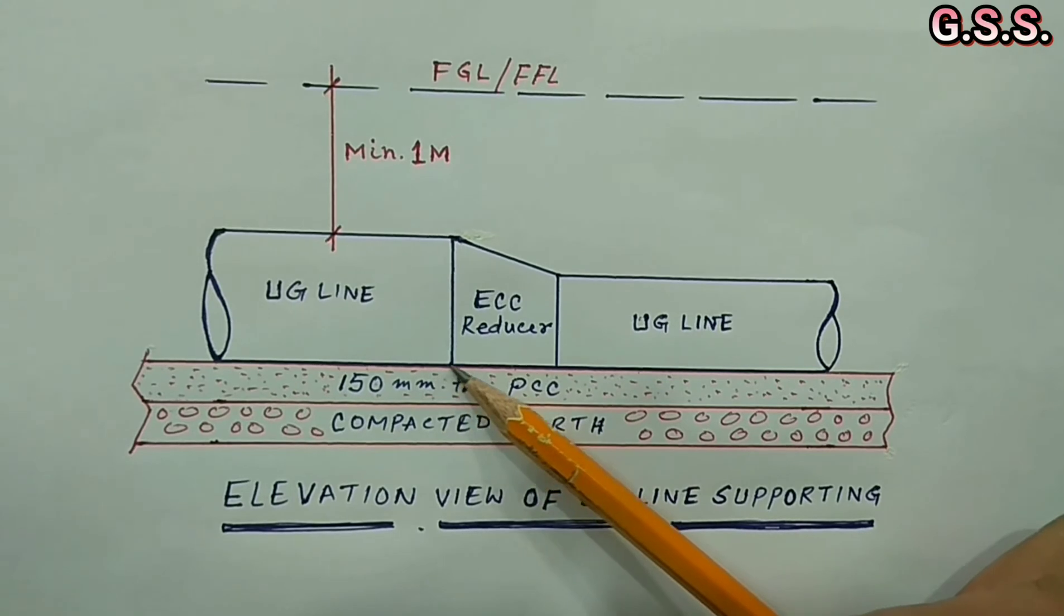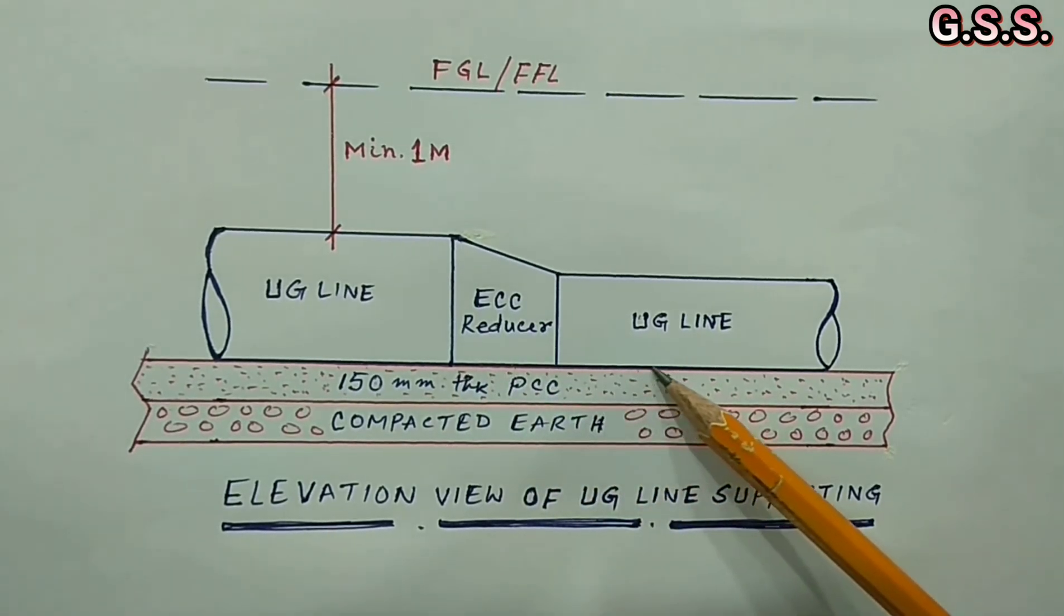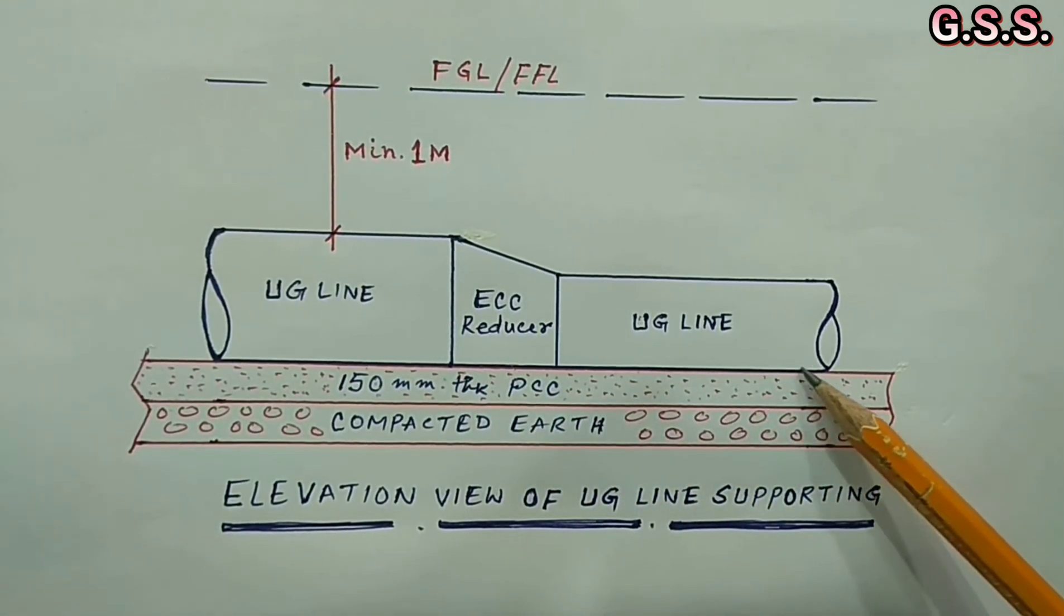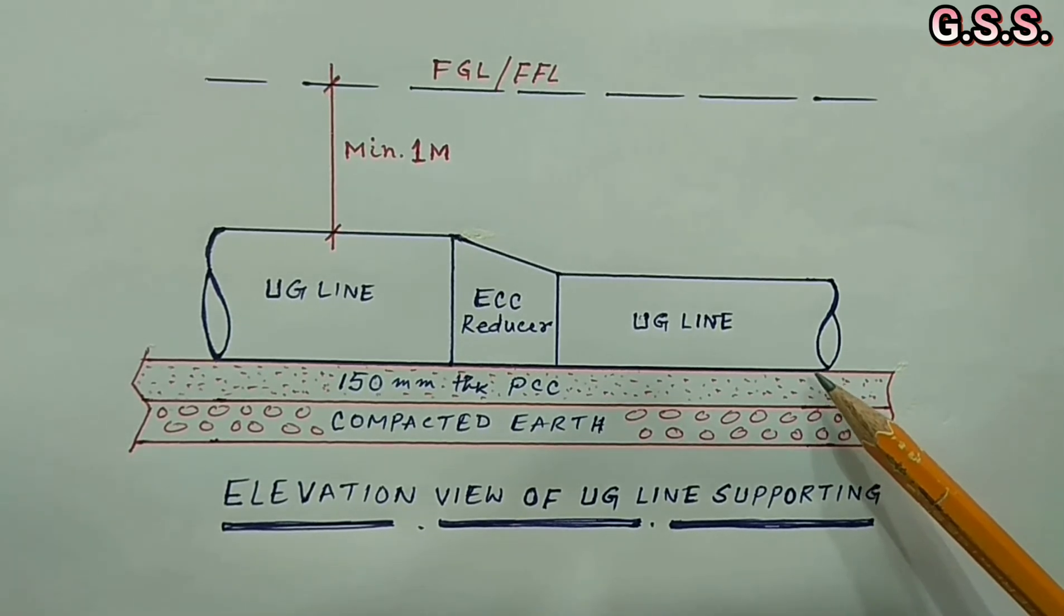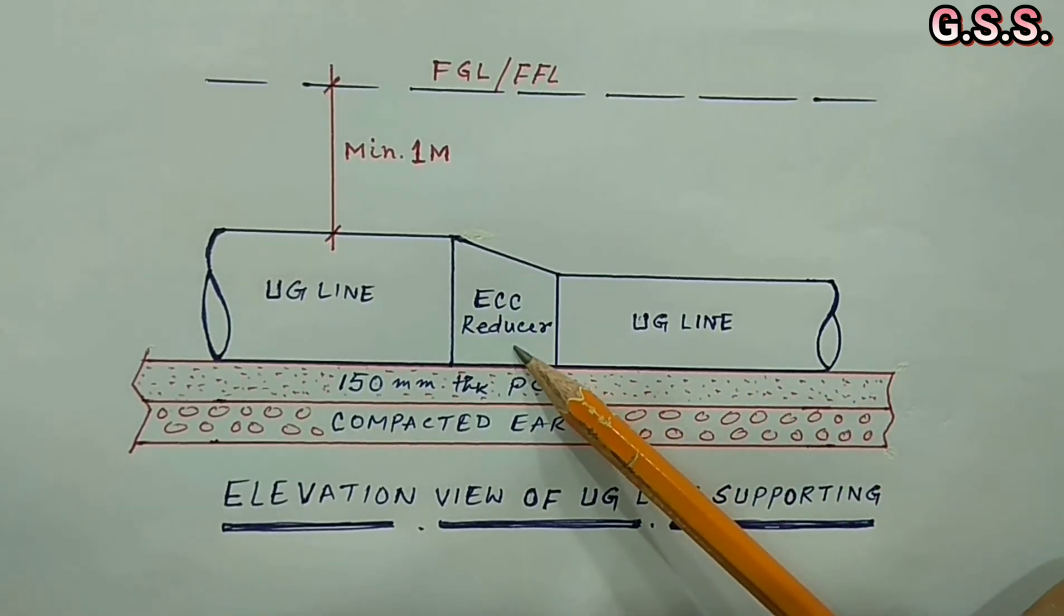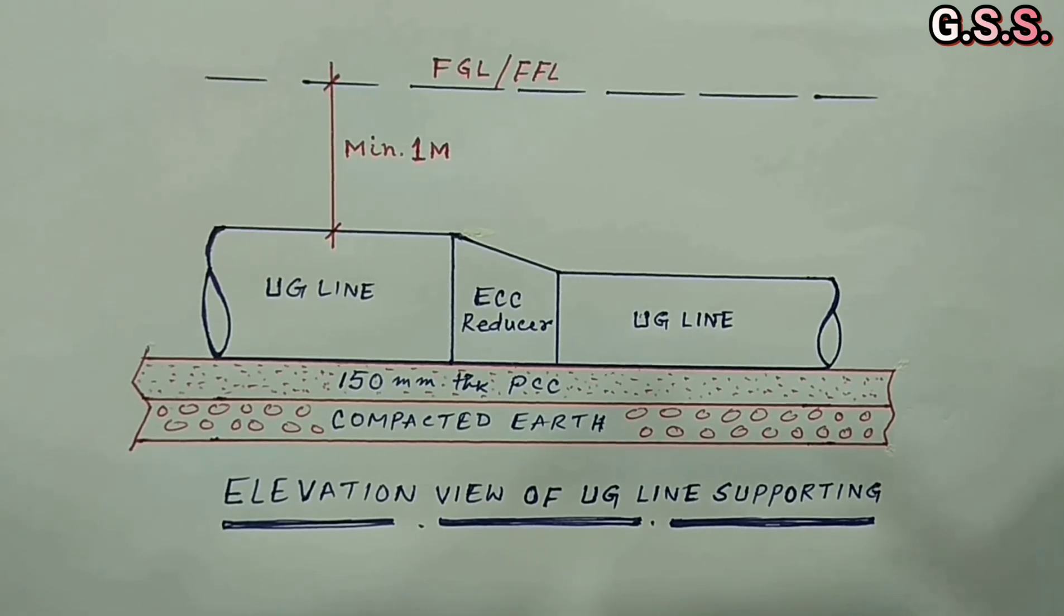Also, due to bottom flat eccentric reducer, cleaning and flushing of the line will be better because no debris will accumulate across the eccentric reducer.